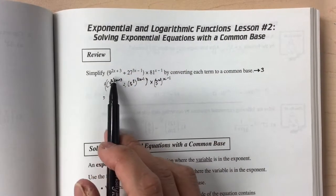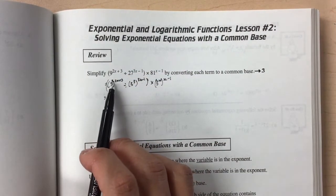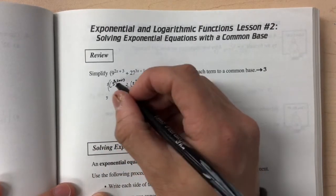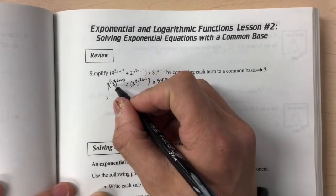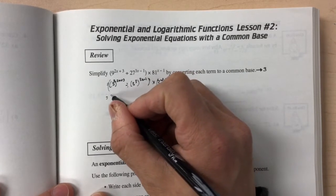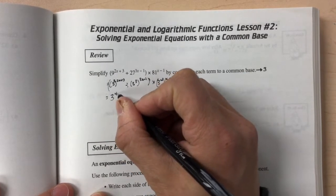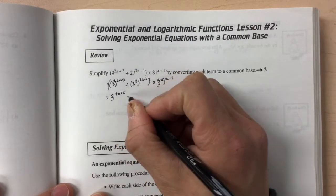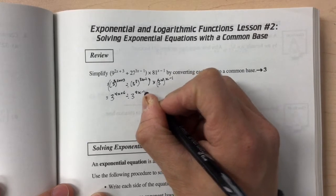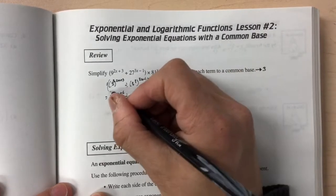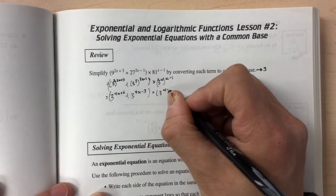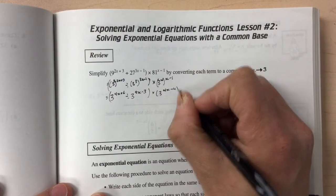The next step is to simplify each of these exponents, and here I'm going to use my power law. So I'll have 3 to the power of 4x plus 6, divided by 3 to the power of 9x minus 3, and then multiplying by 3 to the power of 4x minus 4.